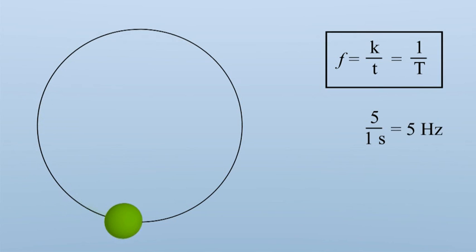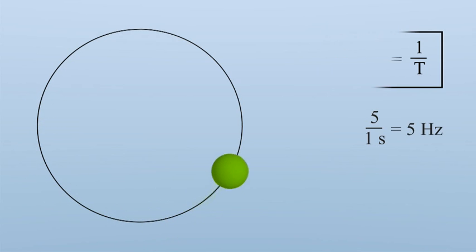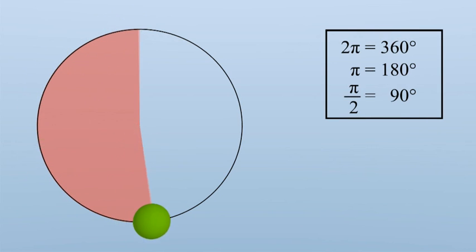In mathematics and physics, angles are always measured counterclockwise and given in radians as well as degrees. 2 times pi matches 360 degrees, 1 pi the half so 180 degrees, and pi over 2, again half of that, is 90 degrees.